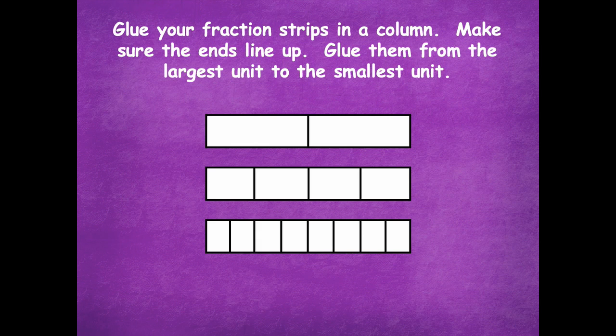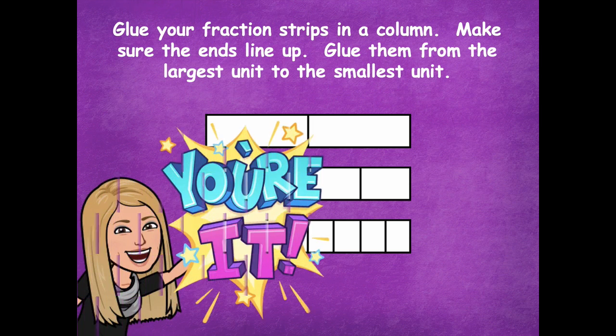Now you're going to glue your fraction strips in a column. Make sure that the ends line up. Glue them from the largest unit to the smallest unit. Pause the video, do that, and then click play when you're ready for the next step. Here's what yours should look like.